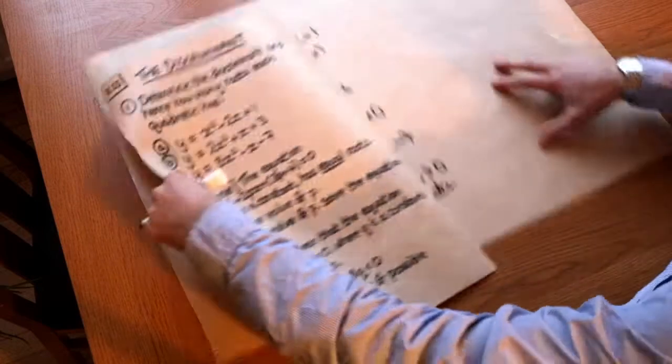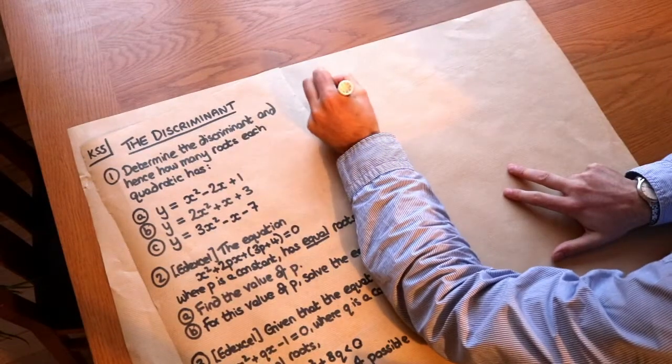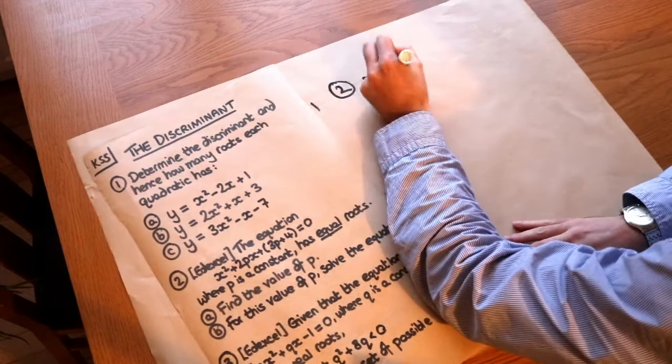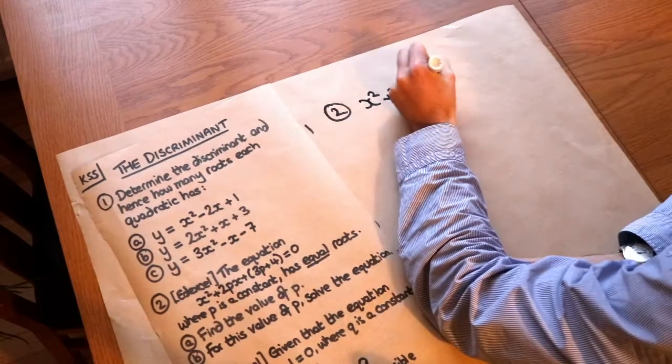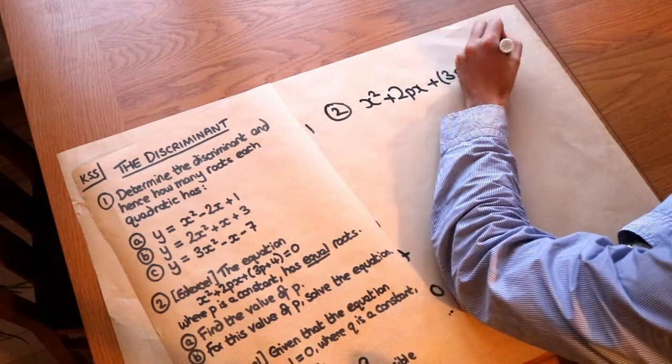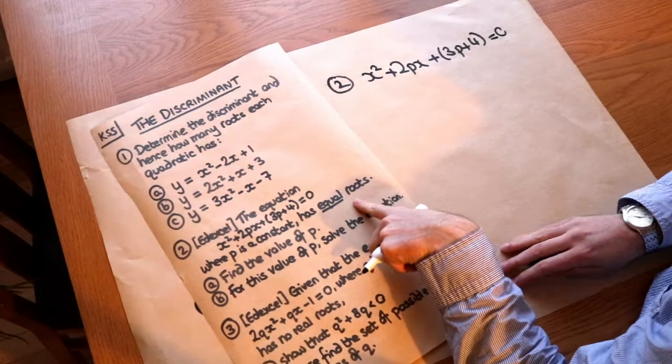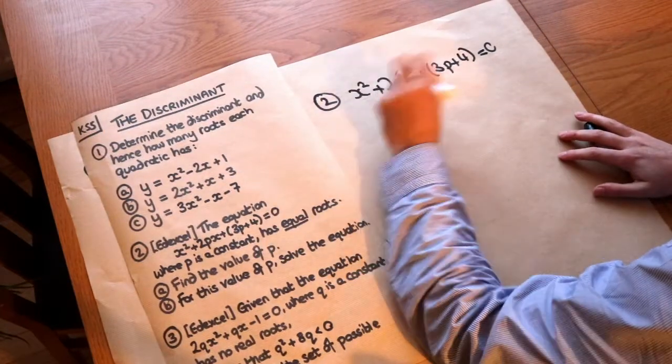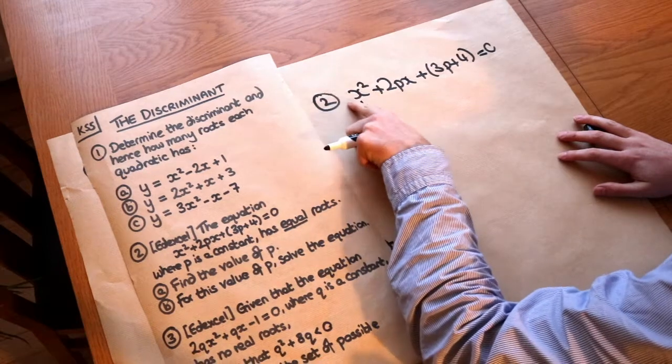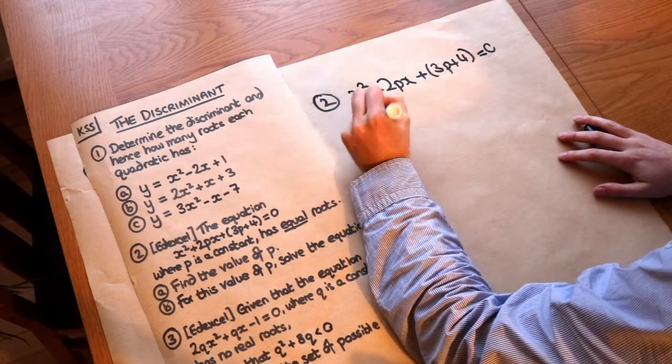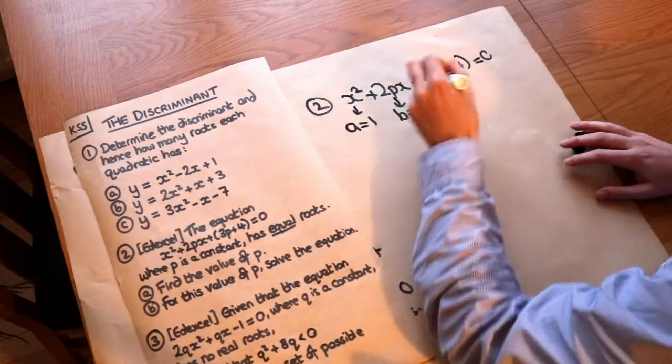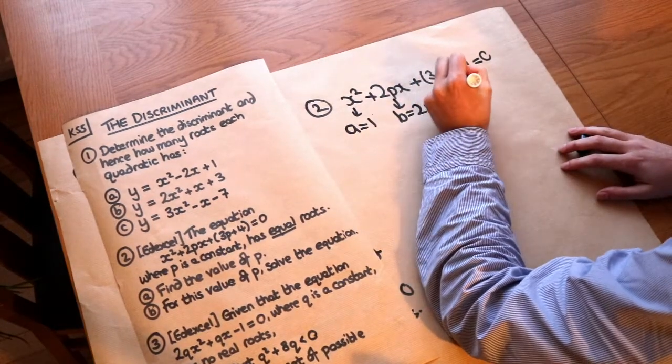Now let's look at these harder problems. This is an Edexcel exam question. The equation x² + 2px + 3p + 4 = 0 has equal roots. So do you remember, it has equal roots if b² - 4ac = 0. Let's first write what the a, b, and c are. So we can see the a here is 1, because it's 1x². The b = 2p, the constant in front of the x, and the c = 3p + 4.